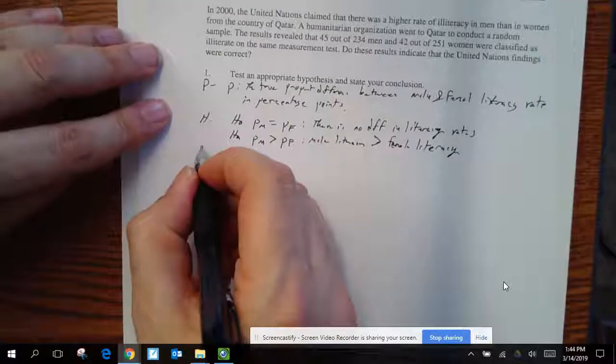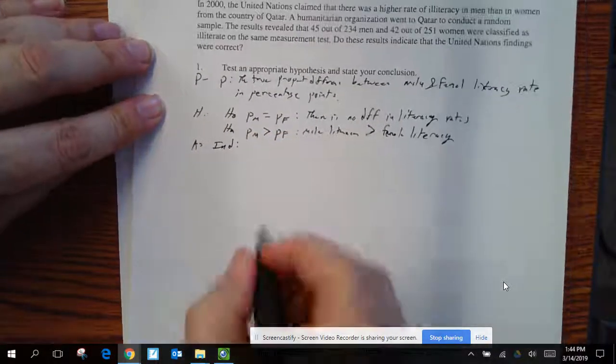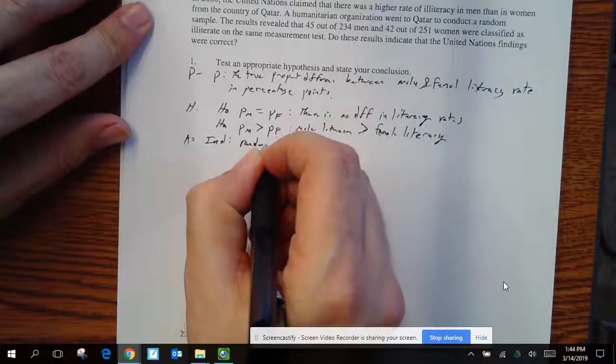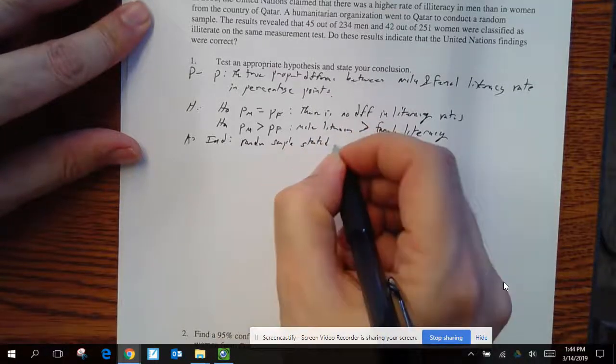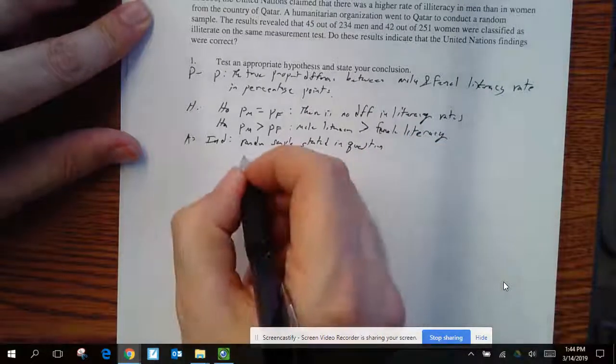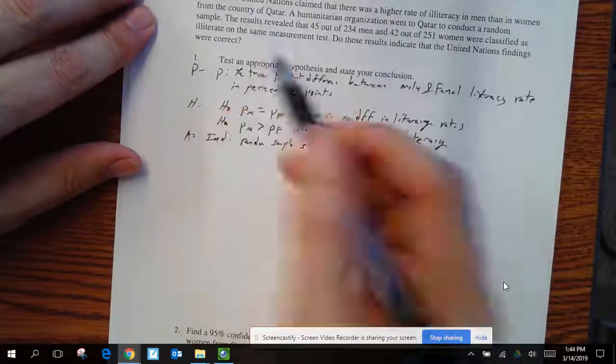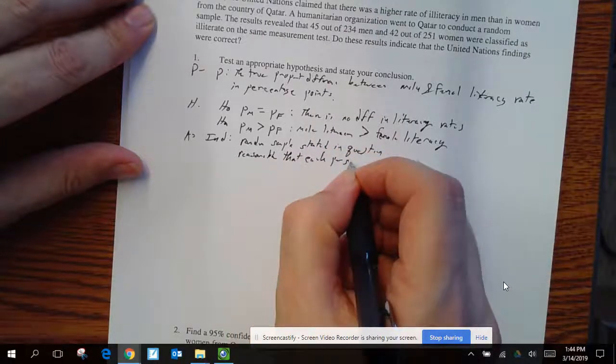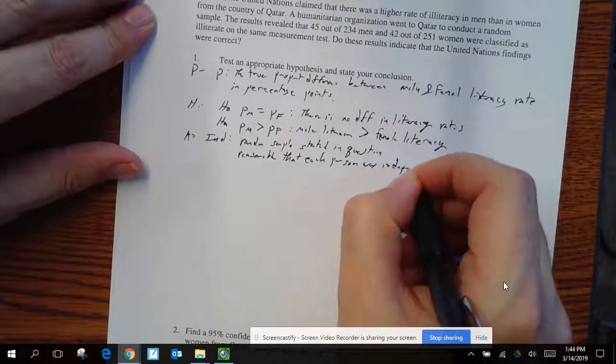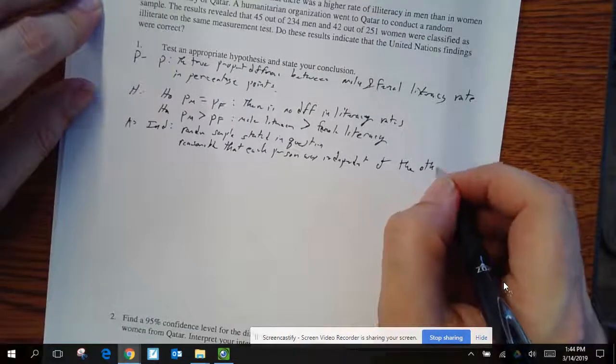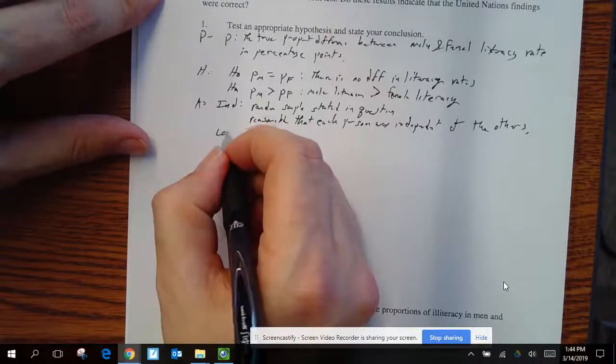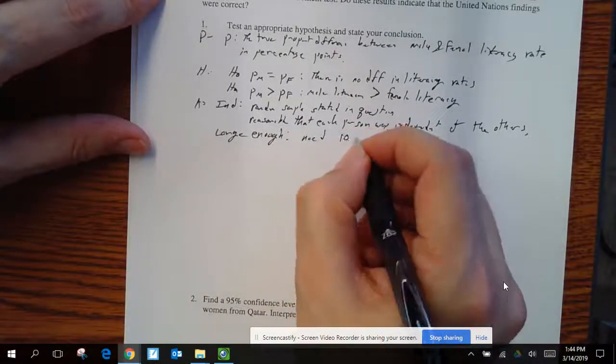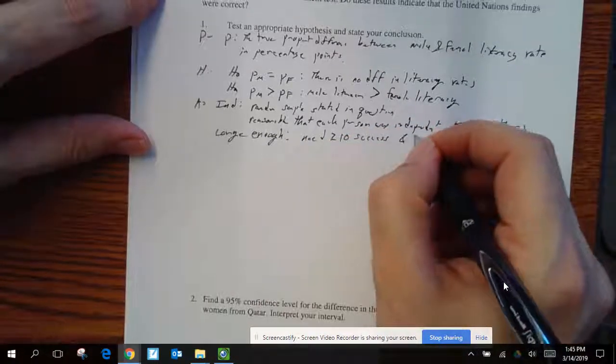So we're going to go to A, our assumptions. Our assumptions are independence. But to get independence, it's reasonable that a random sample, well, first off, we need a random sample. Conduct a random sample. Stated in the problem. I also need to make sure it's reasonable that they're independent. Well, that a random sample, men and women, they're reasonably independent. Each person was independent of the others. So that's reasonable. I need to know, is it large enough? Which means I need 10 success and 10 failure. Need greater than or equal to 10 success and greater than or equal to 10 failure.